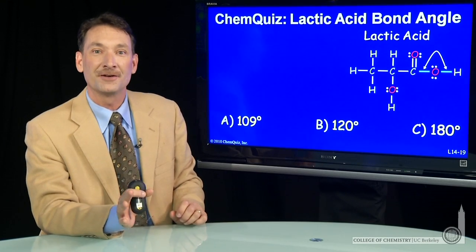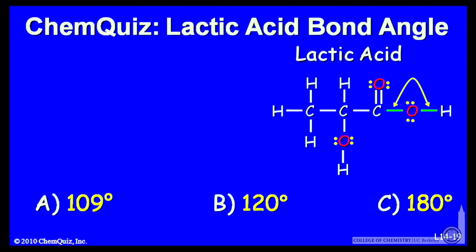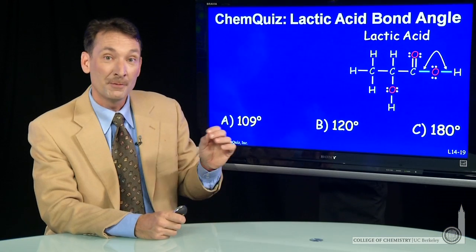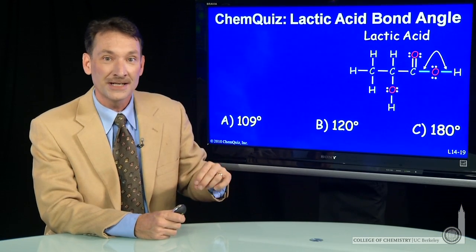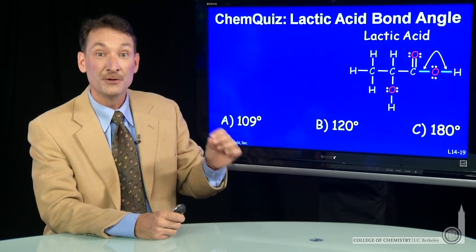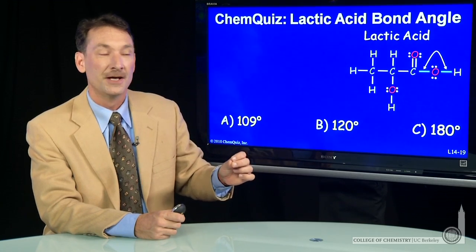We're looking at bond angles in lactic acid. So I've drawn out the Lewis dot structure for lactic acid. And when we draw Lewis dot structures, often for convenience, we'll just draw bonds at 90 degrees or 180 degrees. But remember,